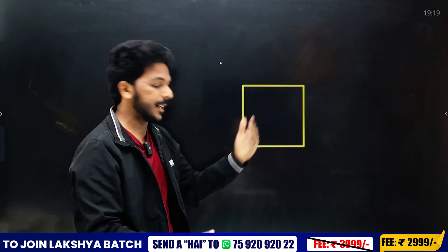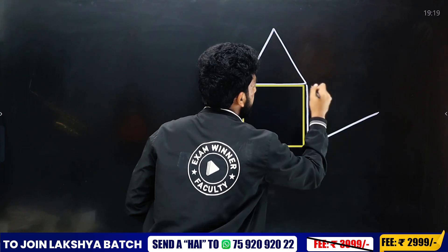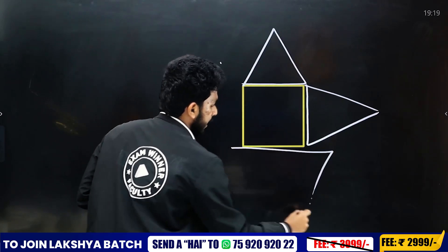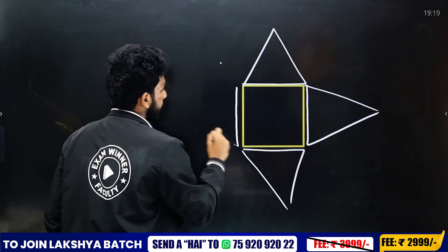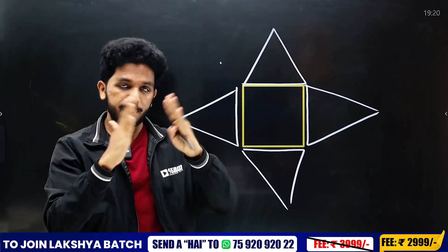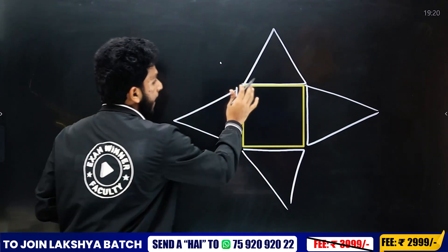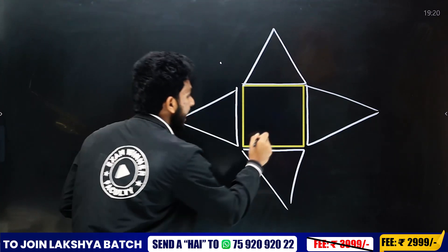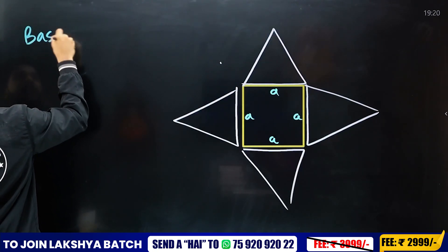Each triangle is the same. You see each triangle — this is 3 triangles, then we see 4 triangles. You see the base side has the same length. Every triangle is the same size. Then we have 4 triangles and a base. The base edge is the same size — labeled 'a', 'a', 'a', 'a'. Base and edge are the same size.